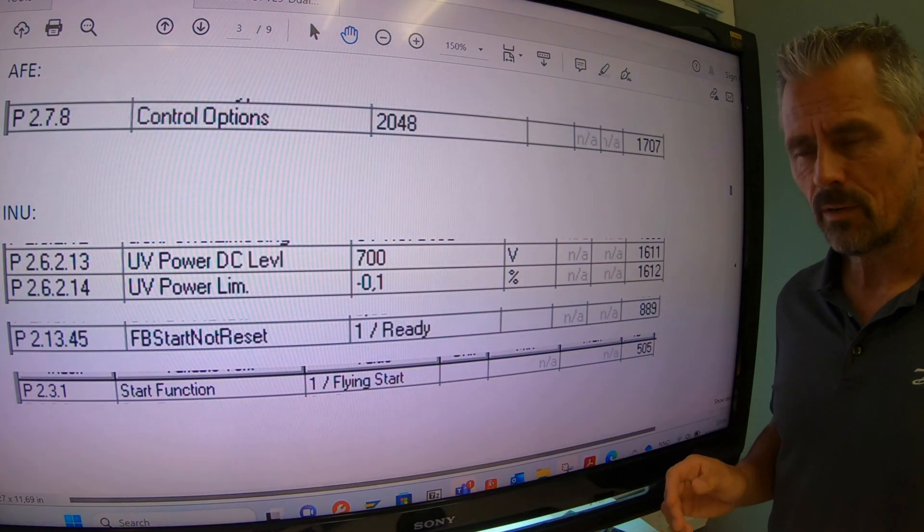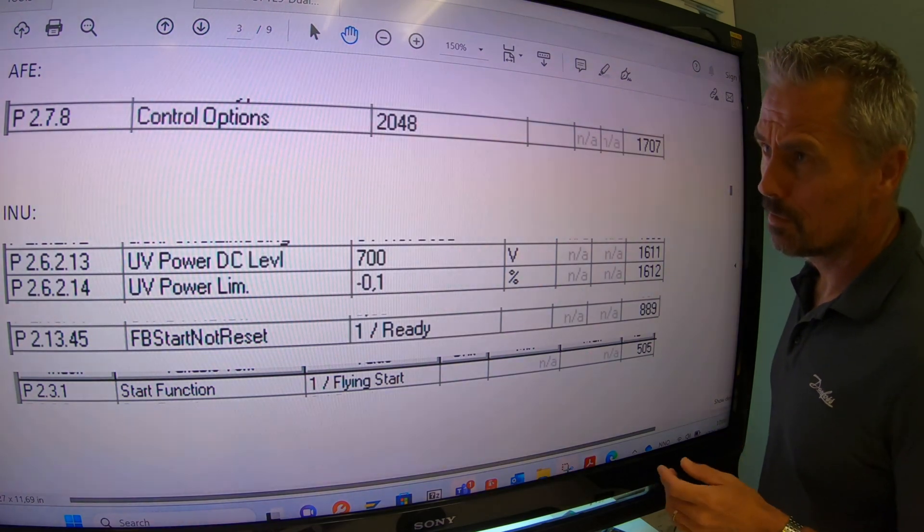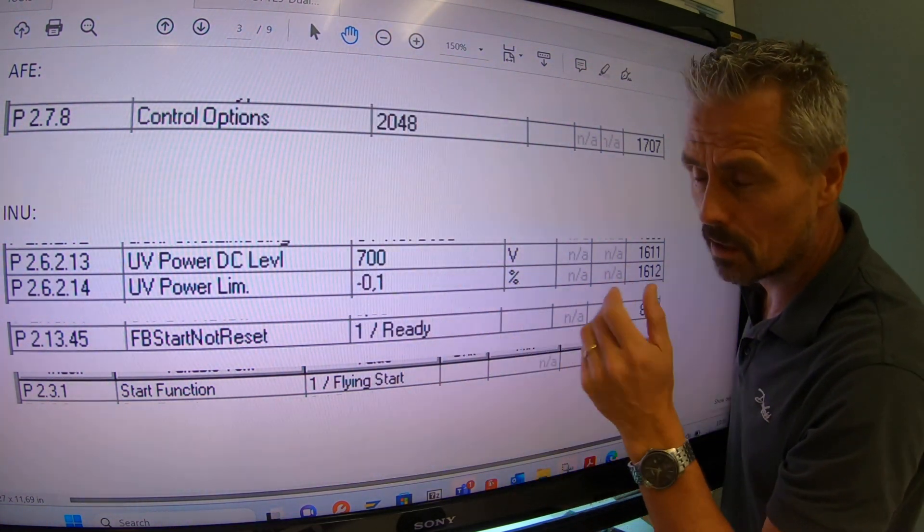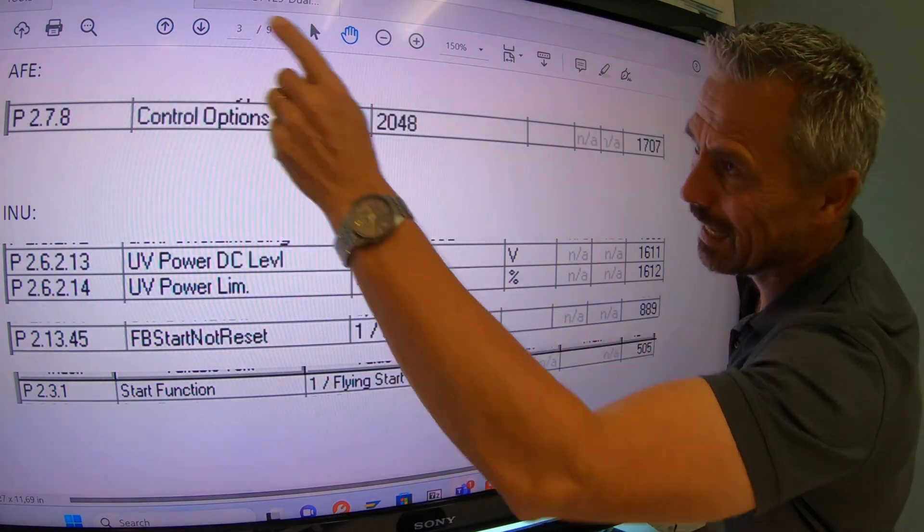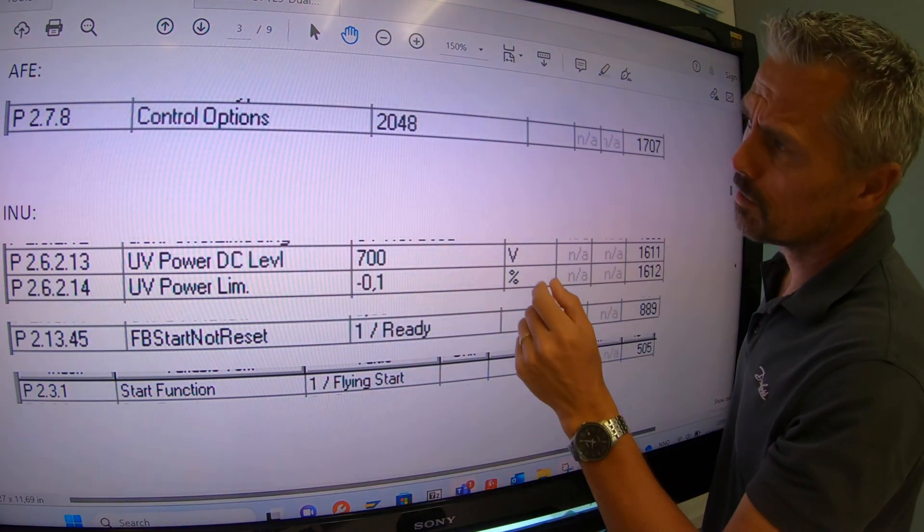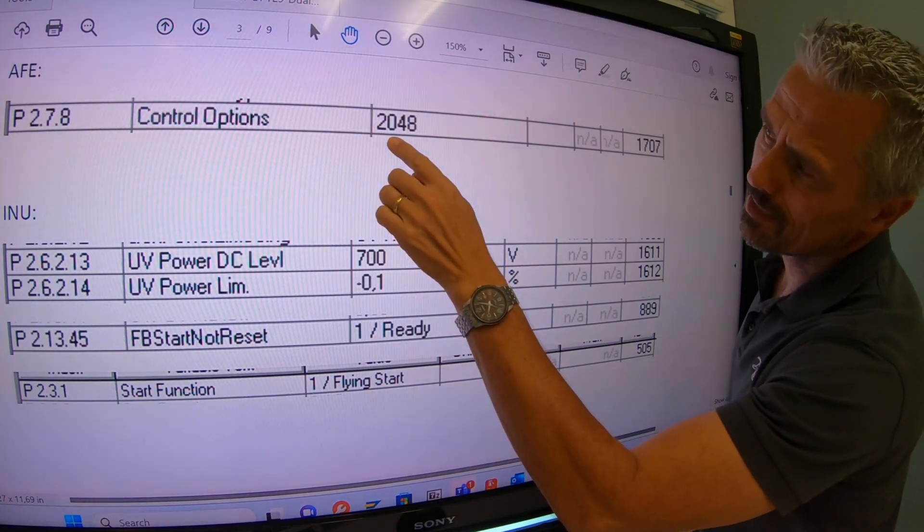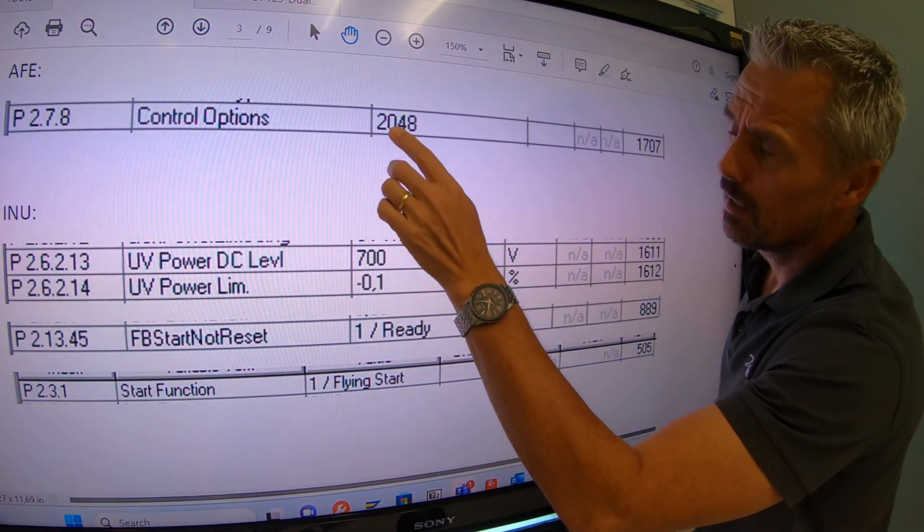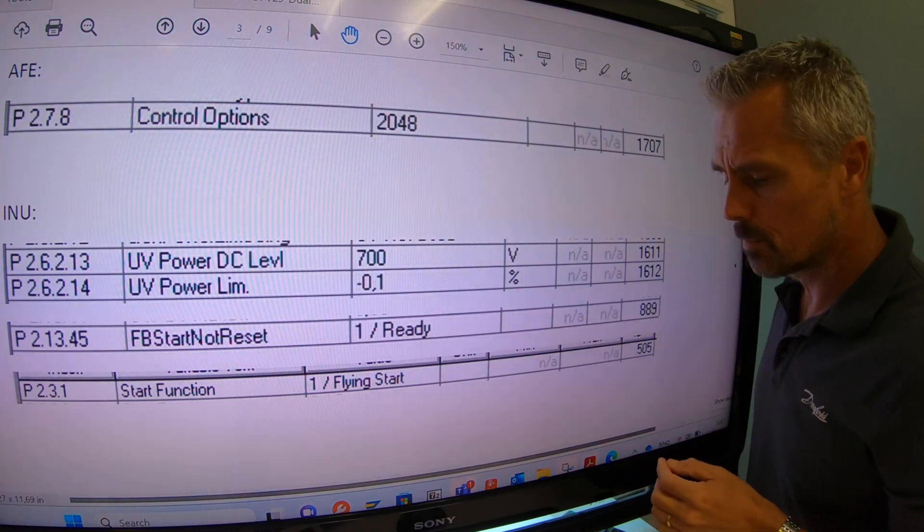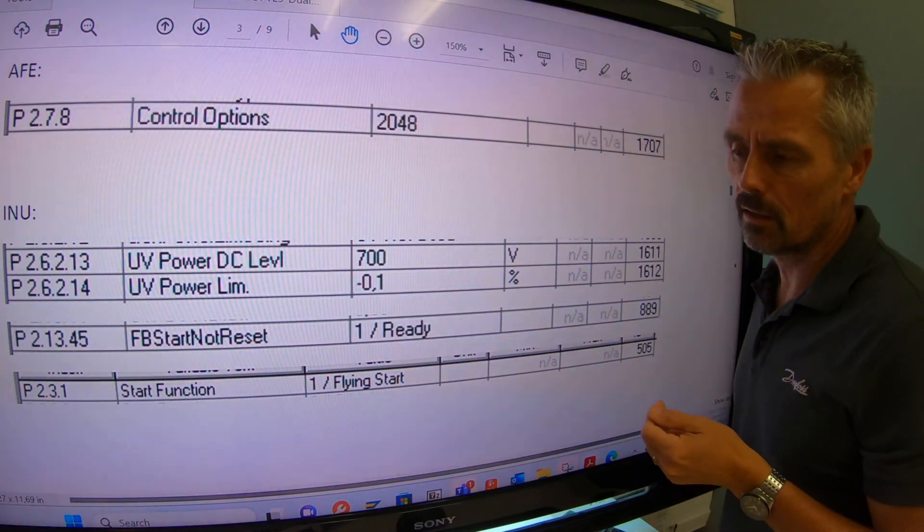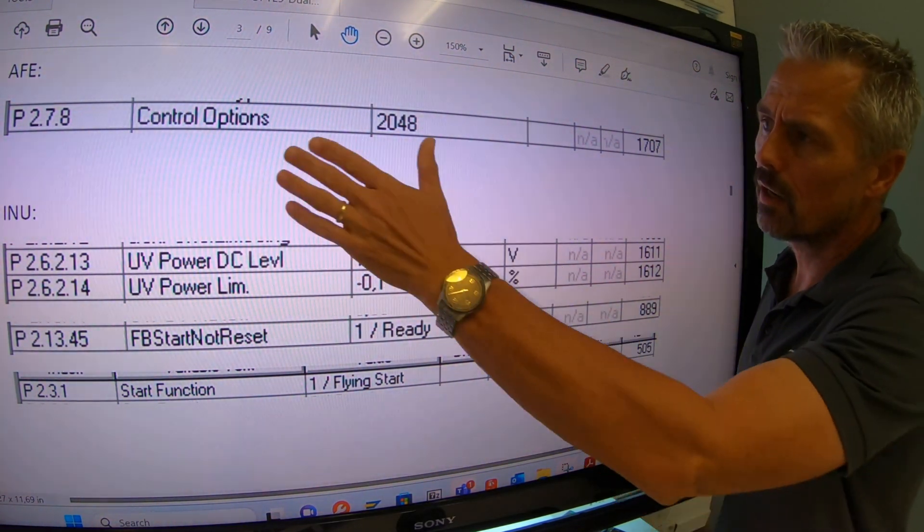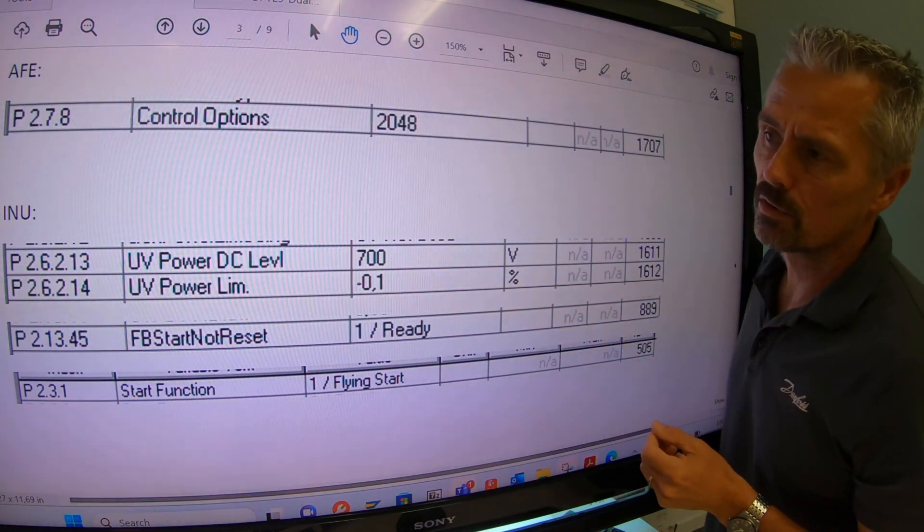Let's start with a quick version showing the parameters needed to get this functionality. In the active frontend, which actually is a grid application in active frontend mode, you need to set bit number 11 in control options. And that is decimal 2048. This will deactivate the supervision of the line sink and the supply voltage. So it will ride through the blackout without tripping these faults.